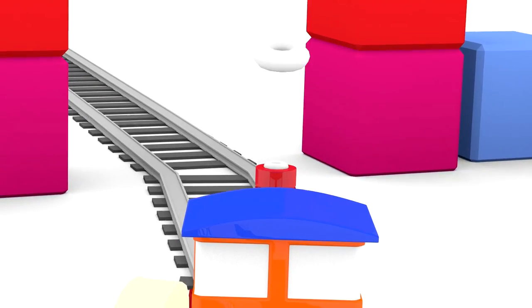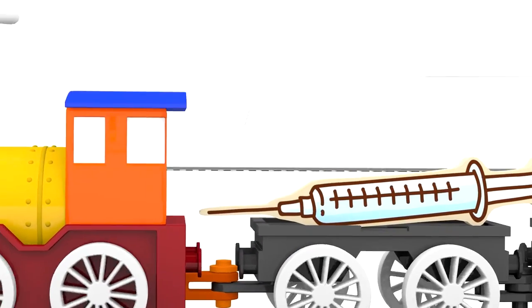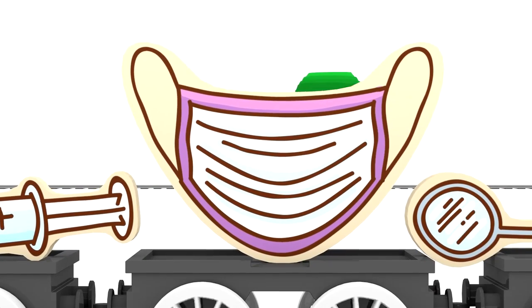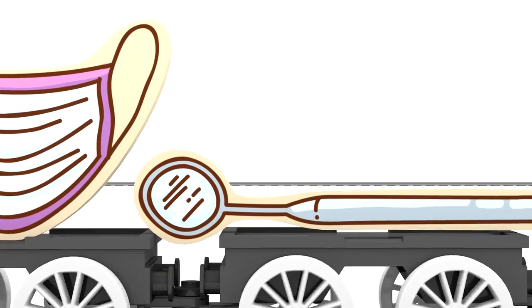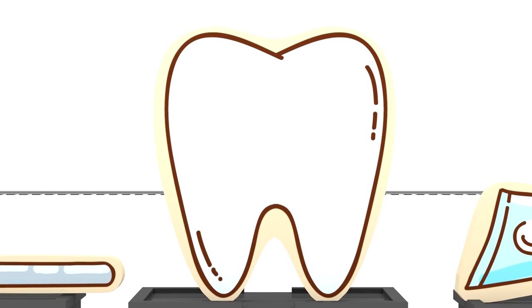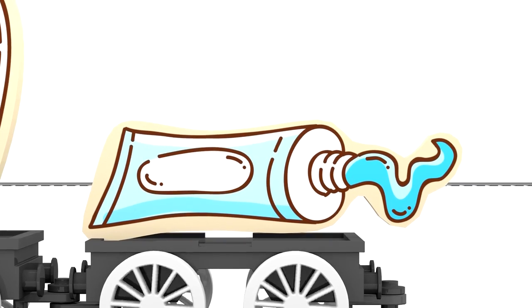What is it carrying in its wagons? Let's see. That's a hypodermic syringe. A mouth mask. A dental mirror. A tooth. And a tube of toothpaste.